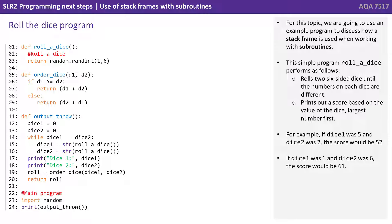This simple program, Roll a Dice, performs as follows. It rolls two six-sided dice until the numbers on each dice are different. It prints out a score based on the value of the dice with the largest first. For example, if dice one was five and dice two was two, the score would be 5-2. If dice one was one and dice two was six, the score would be 6-1.